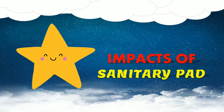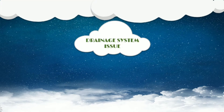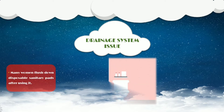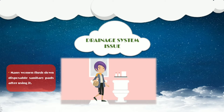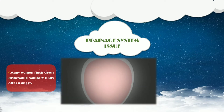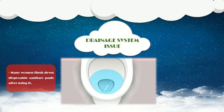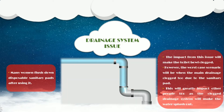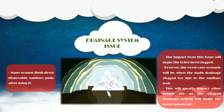Moving on to the next part, which is on the impacts of sanitary pad. The first impact is on drainage system issues. This issue happens due to women disposing their sanitary pad by flushing it down in the toilet bowl. The impact from this issue makes the toilet bowl clogged. The worst case scenario is when the main drainage clogs too due to sanitary pads stuck inside it, greatly impacting other people as the clogged drainage causes water to splash out.